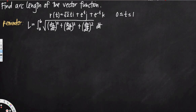In this video we are going to see how to find the arc length of a vector function. This is the equation we are going to use. We have to find the derivative of x, derivative of y, and derivative of z in order to do this problem. From the given function, this is our x value, this is our y value, and this is our z value.